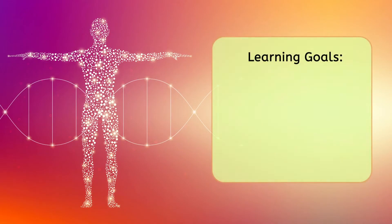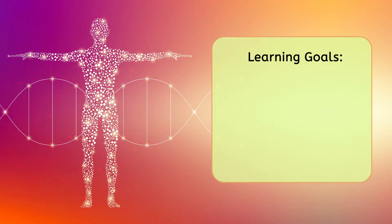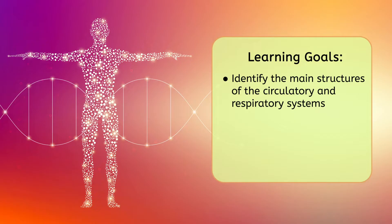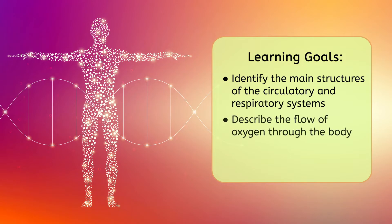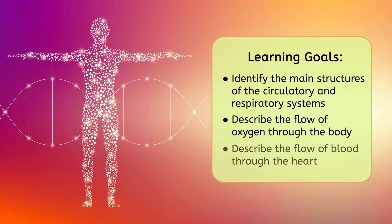But before we get started, let's look at our goals for this lesson. By the end, you'll be able to: identify the main structures of the circulatory and respiratory systems, describe the flow of oxygen through the body, and describe the flow of blood through the heart.